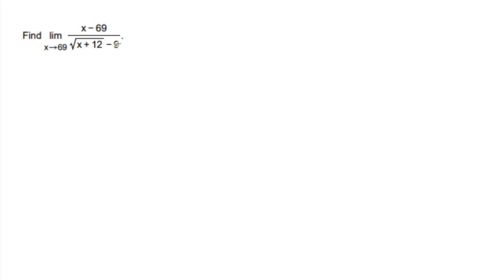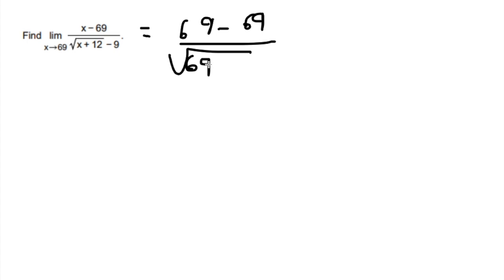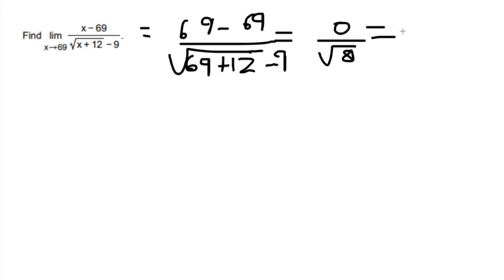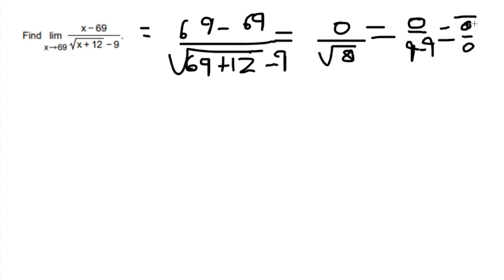For this example, the limit is as x goes to 69. If we plug in 69 for x, on the top we get zero, and on the bottom we get nine minus nine, which is also zero. So we get zero over zero, and we cannot have that — it is not equal to zero, so we have to try something else.